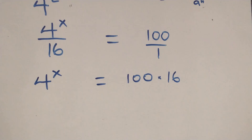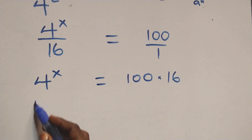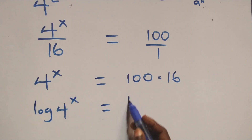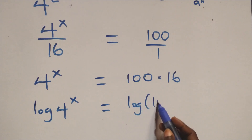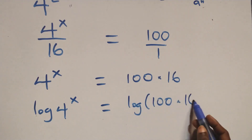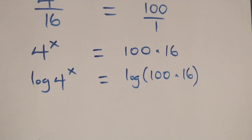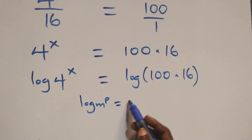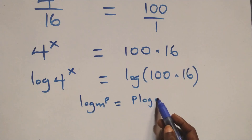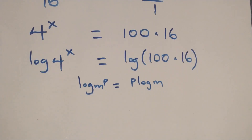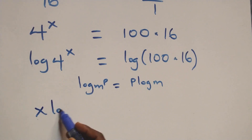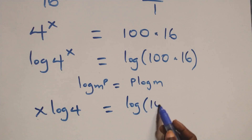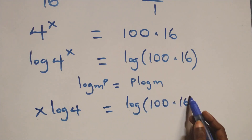From here, we put the log on both sides. We have log 4 raised to power x equals to log of 100 times 16. We then apply the power log rule: log m raised to power p is the same thing as p log m. So what we have becomes x log 4 equals to log of 100 times 16.